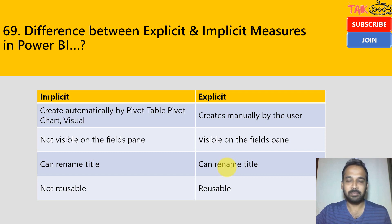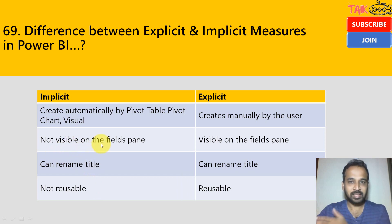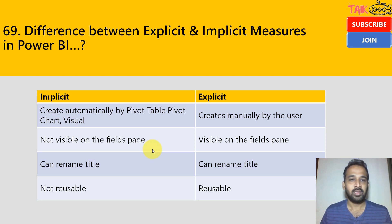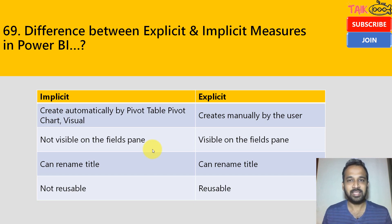For explicit measures, we create functions like SUM, MAX, MIN ourselves. Implicit measures are not visible in the fields pane on the right side, but explicit measures are visible in the fields pane because we create them manually. For implicit measures, we can rename the title once we drag and drop into the visual; for explicit measures, we can also rename them since we create them manually.